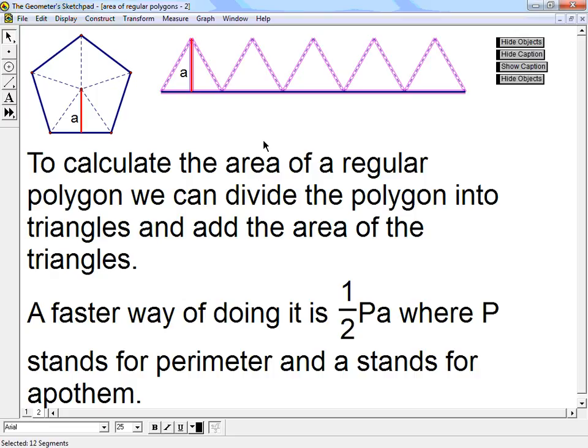To calculate the area of a regular polygon, we can divide the polygon into triangles and add the area of the triangles. The faster way of doing it is one-half times P times A, where P stands for perimeter and A stands for apothem.